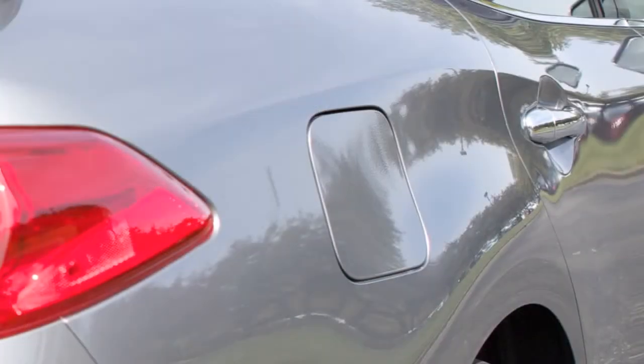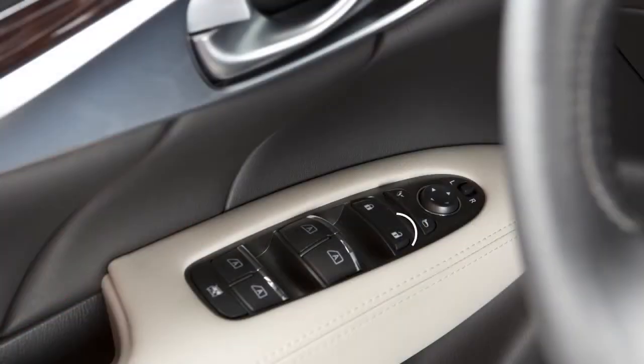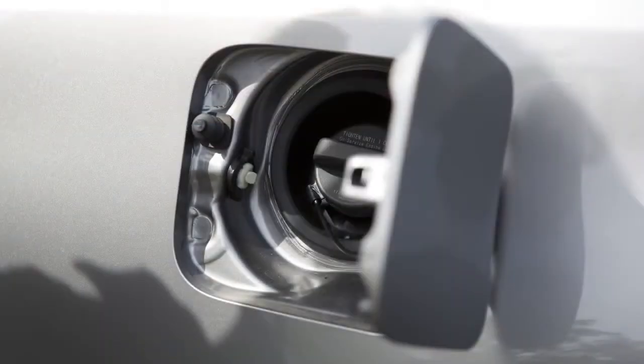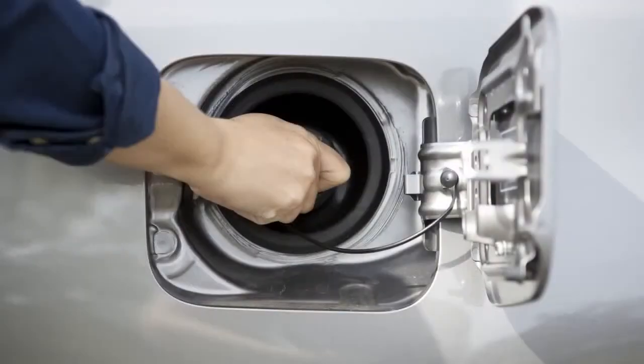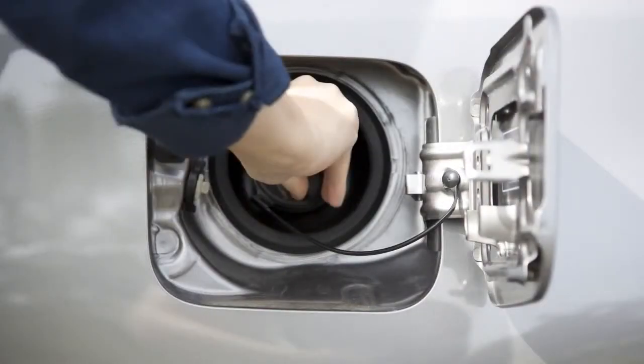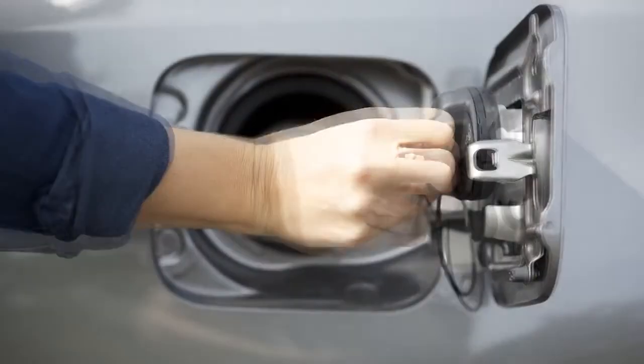The fuel filler door automatically unlocks when the vehicle is unlocked. To open the fuel filler door, exit the vehicle and push the left side of the fuel filler door. To remove the cap, turn it counterclockwise. Put the cap in the holder on the fuel filler door while you are refueling.